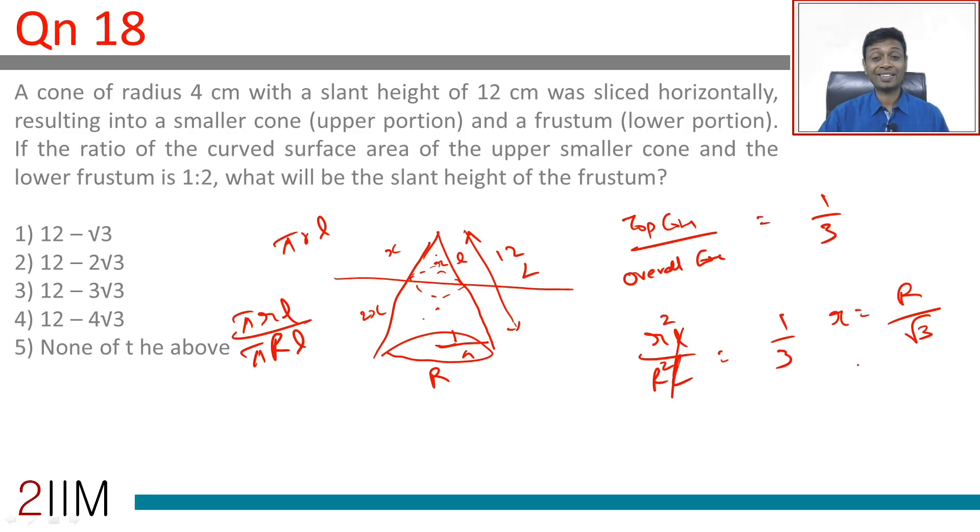The question is: what will be the slant height of the frustum? This is 12. The slant height of this part, by similar triangles, the overall is 12, so this slant height will be 12 by √3. The remaining slant height is 12 minus 12 by √3.